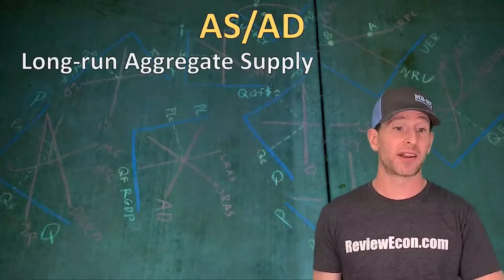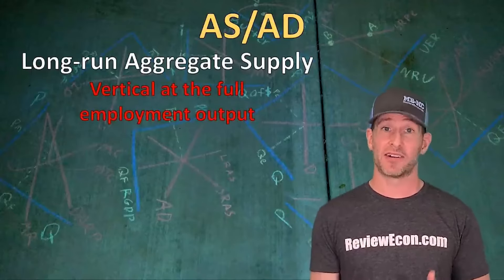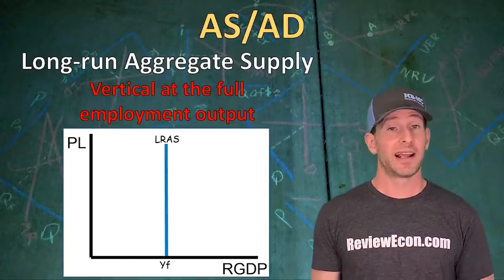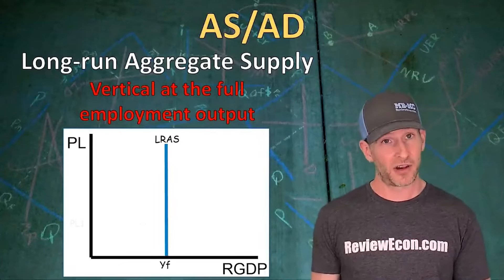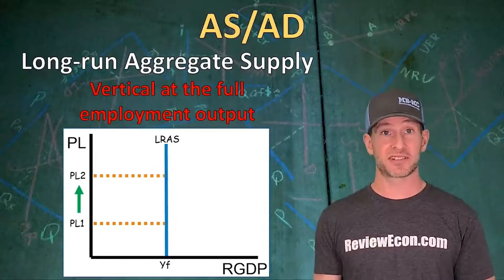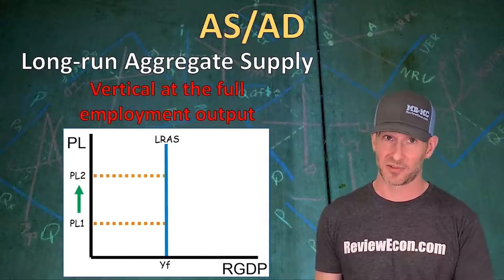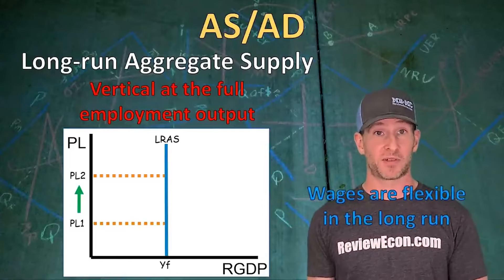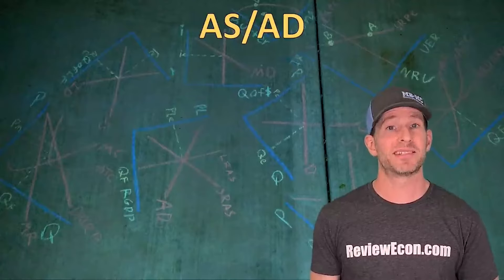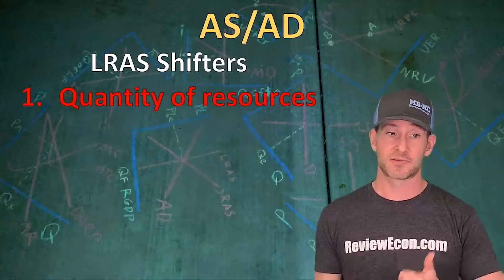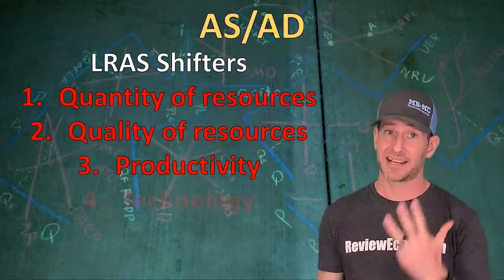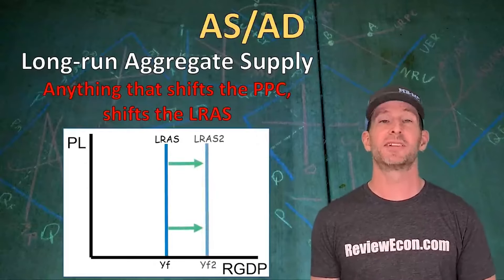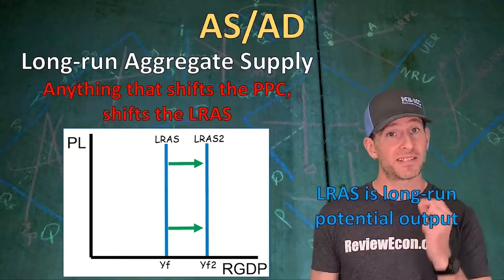On the AS-AD model we have a third curve — the long-run aggregate supply curve — which is a vertical supply curve at the quantity of full employment output, labeled YF. The LRAS is vertical because wages are flexible in the long run. What shifts it? The quantity of resources, quality of resources, productivity, and technology. Anything that shifts the production possibilities curve also shifts the LRAS. A rightward shift is an increase; leftward is a decrease.